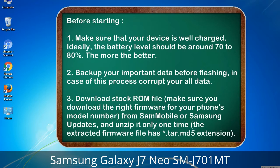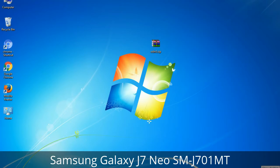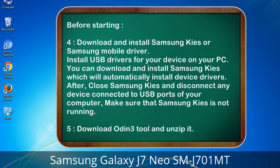Download the firmware from Sammobile or Samsung updates, and unzip it only one time. The extracted firmware file has a *.tar.md5 extension. 4. Download and install Samsung Kies or Samsung mobile driver to install USB drivers for your device on your PC. Samsung Kies will automatically install device drivers. After, close Samsung Kies and disconnect any device connected to USB ports — make sure Samsung Kies is not running. 5. Download the Odin 3 tool and unzip it.